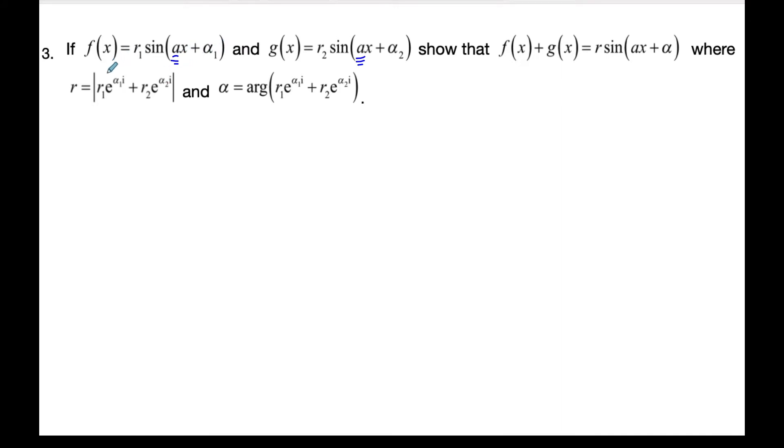I'm going to add them together and this is just saying like if you do it what do you end up? What's the R value going to be and what's the alpha or the argument going to be? So if I'm going to add F of X plus G of X, it's sine so I know I'm going to do the imaginary part of R1 E to the AX plus alpha 1 times I plus the imaginary part of E AX plus alpha 2 I.